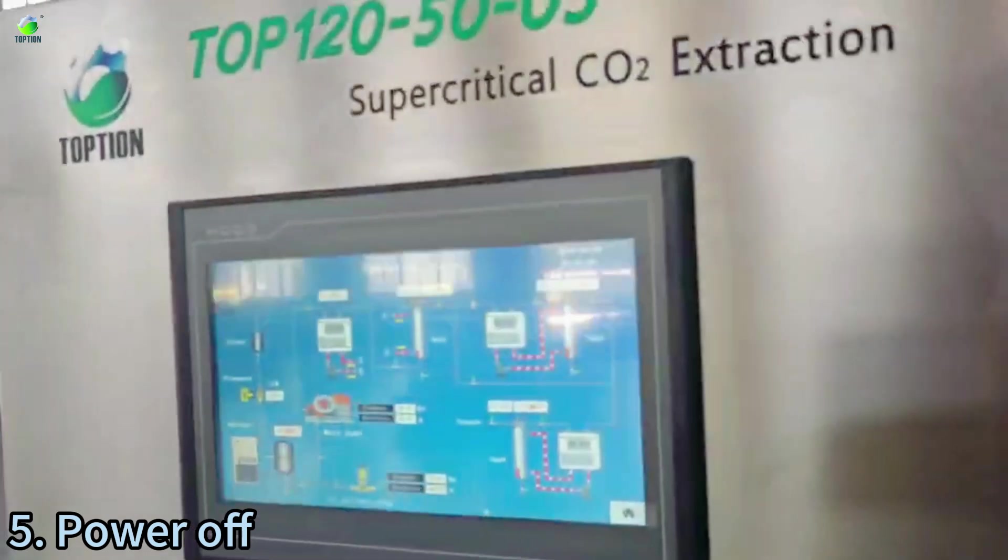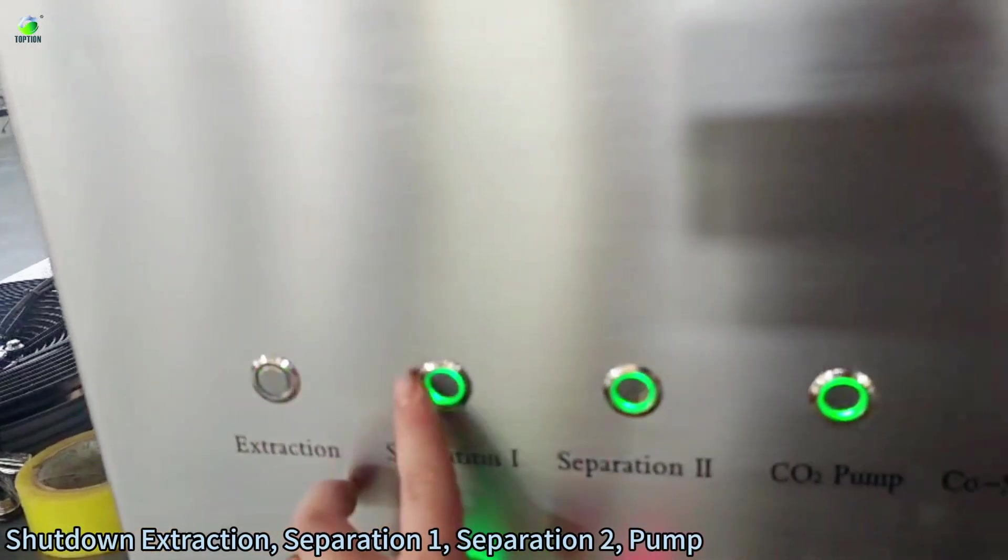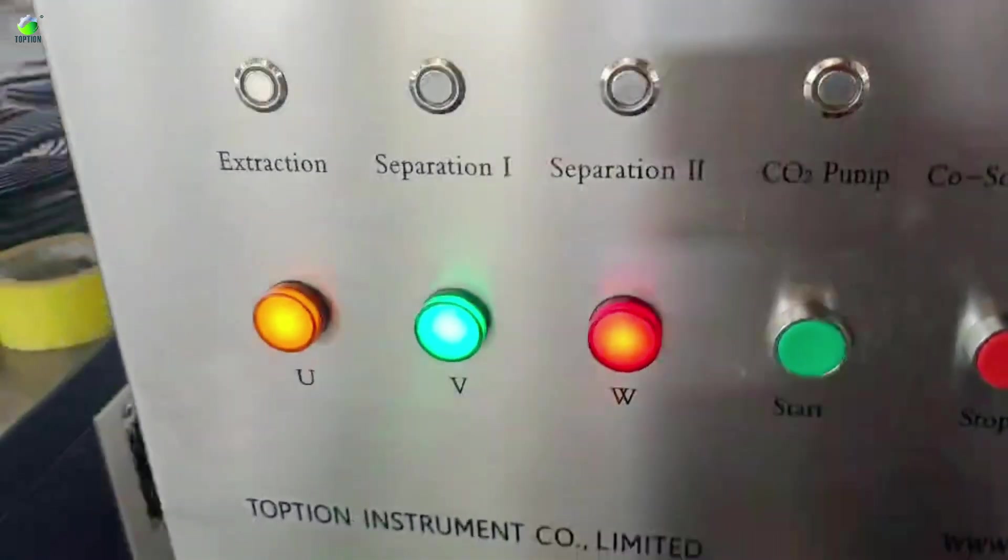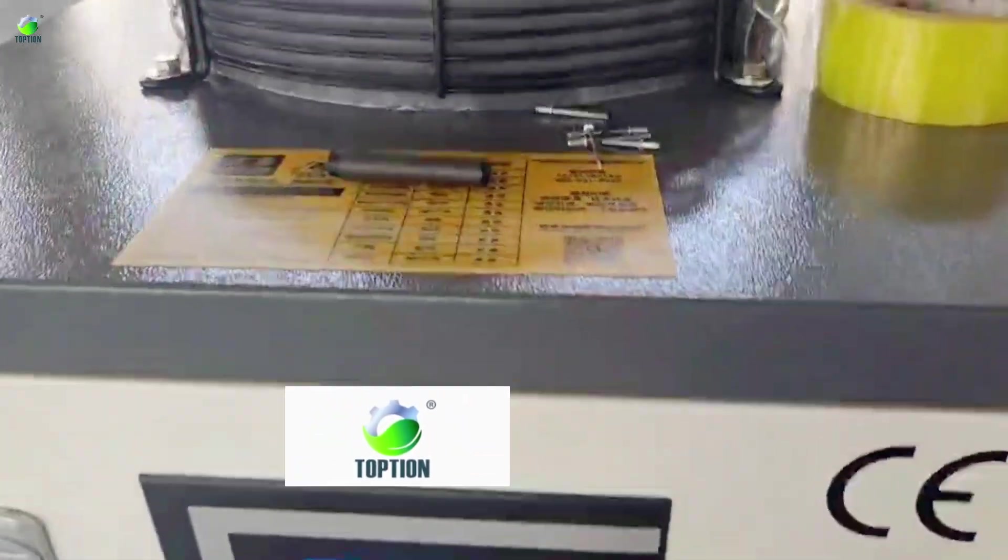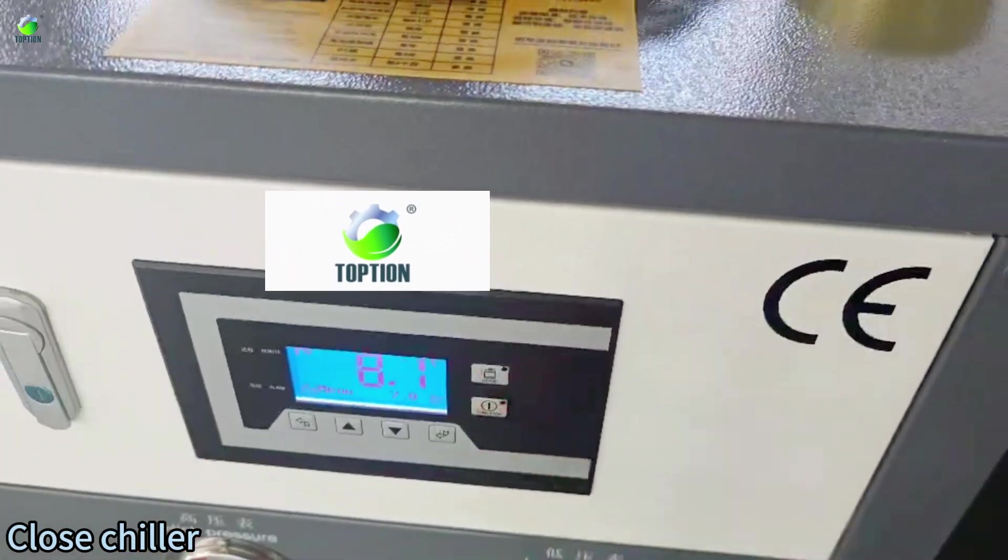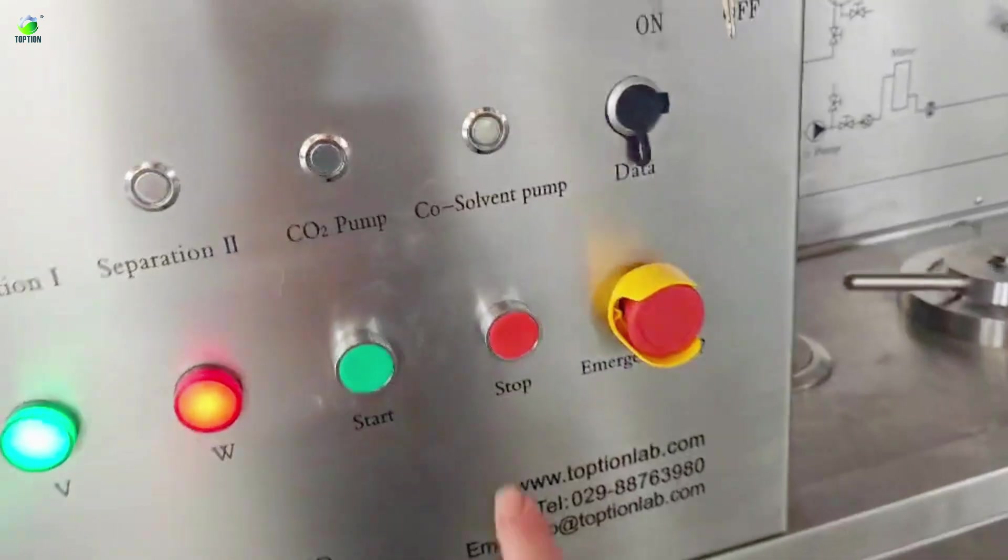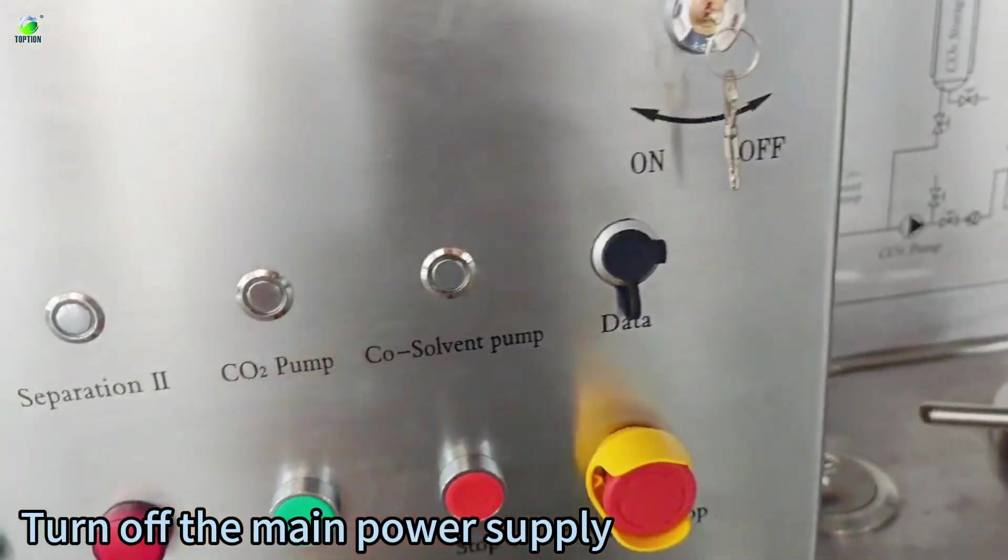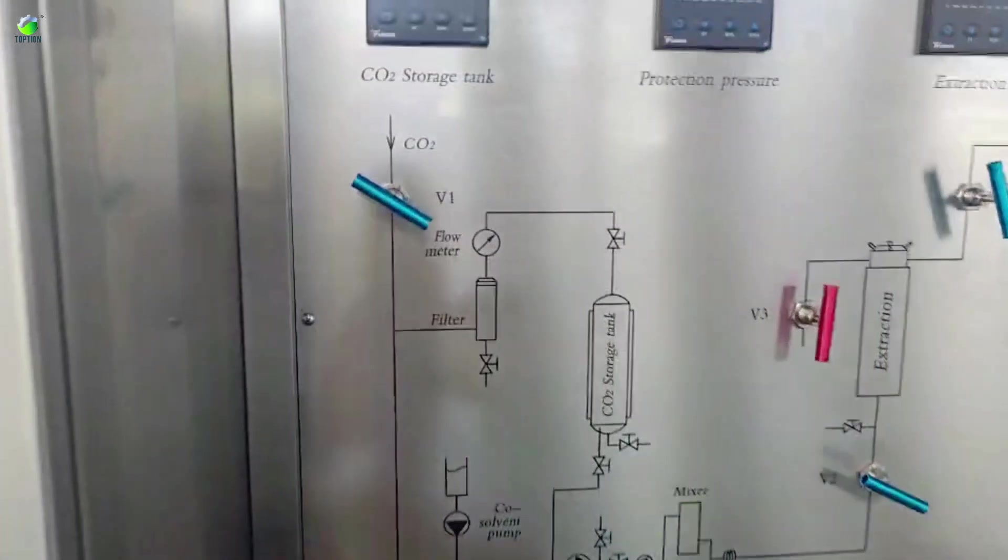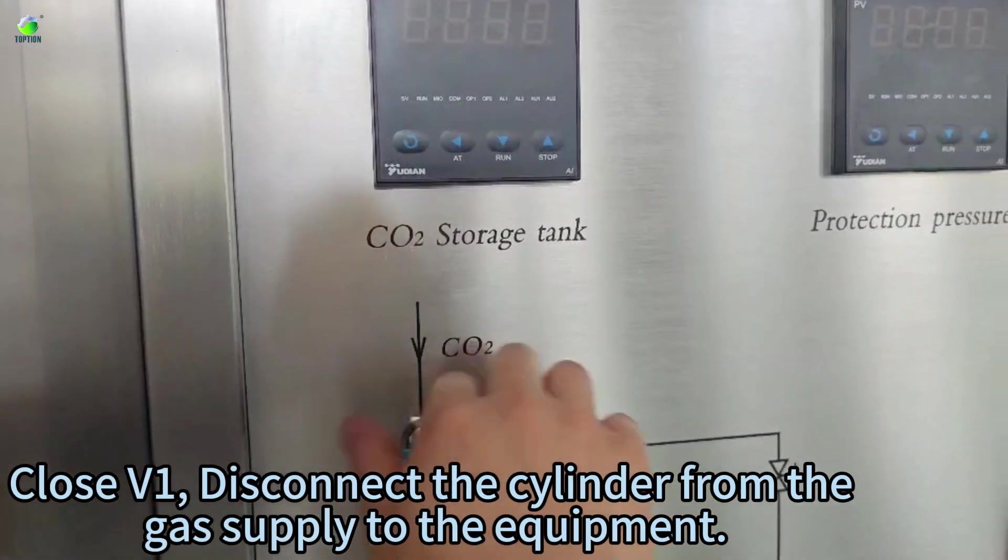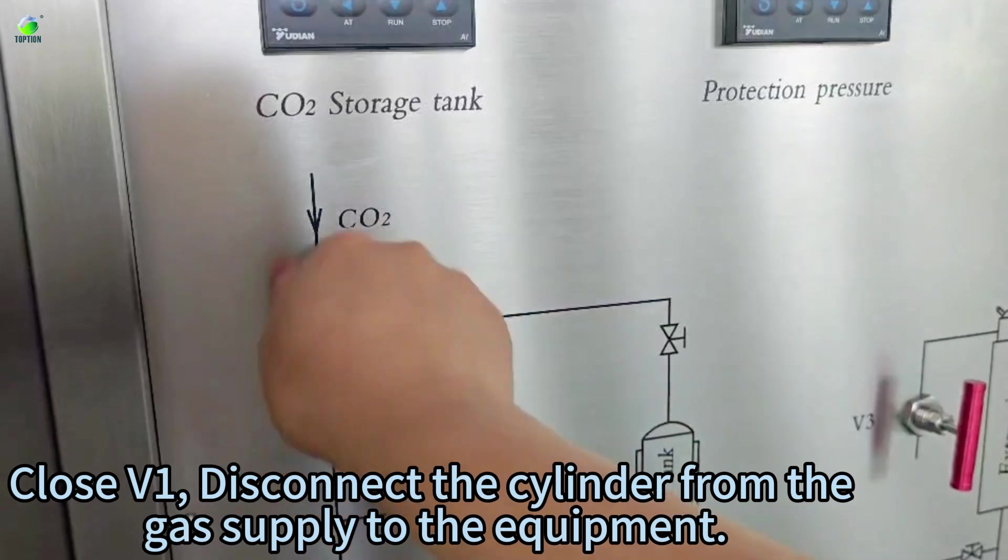Cool, power off. Shut down extraction, separation, pump. Close chiller. Turn off the main power supply. Close VE. Disconnect the cylinder from the gas supply to the equipment.